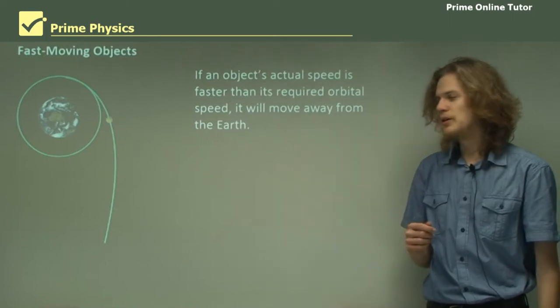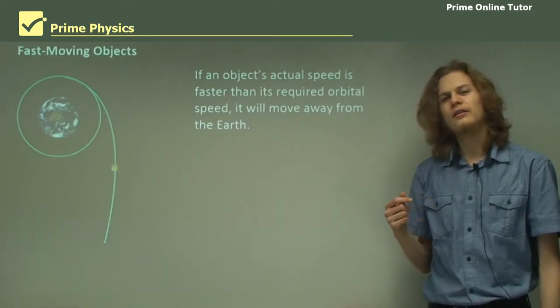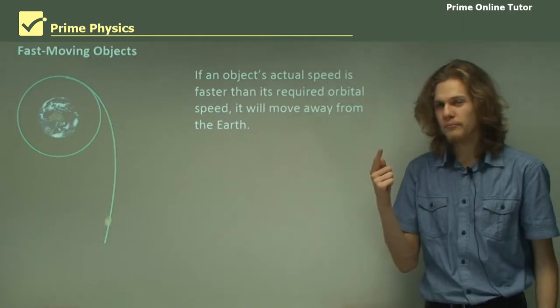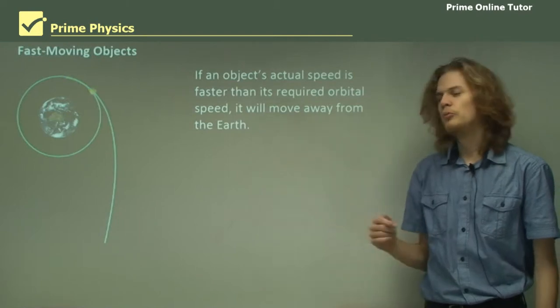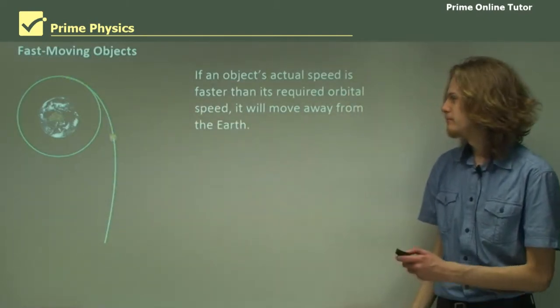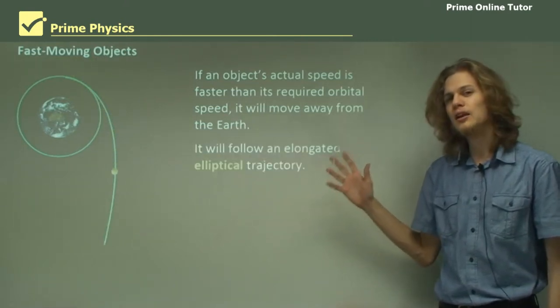Now if an object's actual speed is faster than its orbital speed then the gravitational force won't be strong enough to pull it around in a circle. This means that we'll be moving away from the Earth which we can see in this animation. So we'll follow an elongated elliptical trajectory.